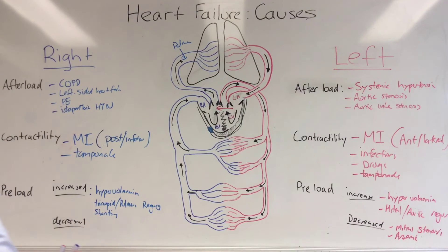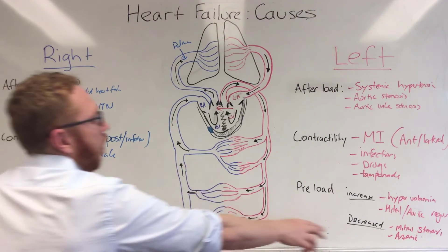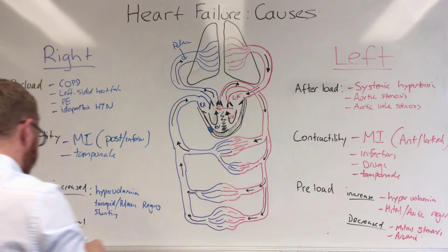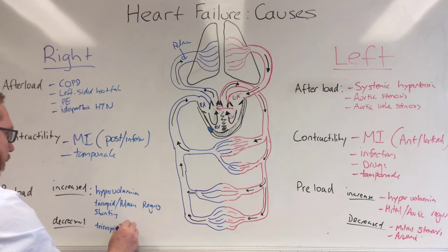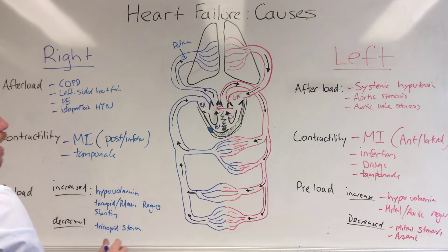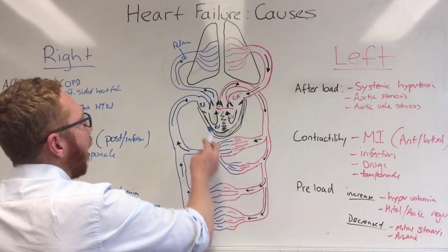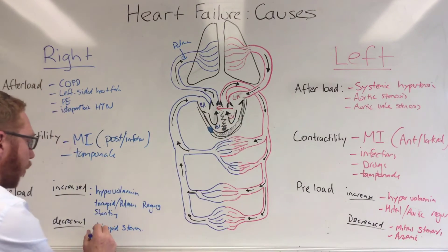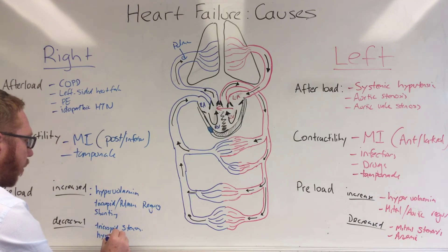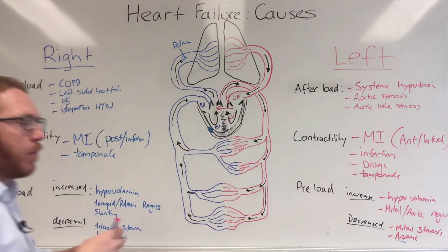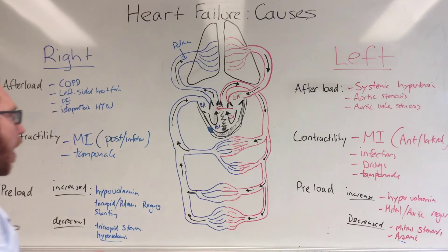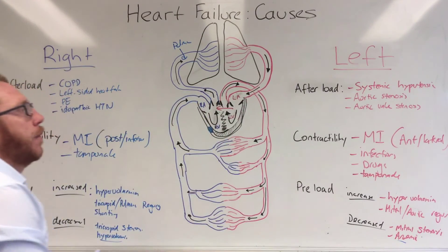For decreased preload on the right side, similar to the left: instead of mitral stenosis we have tricuspid stenosis. We also have hypovolemia — not enough volume in the body. Cardiac tamponade could also be a factor, as it prevents enough fluid from filling the heart.